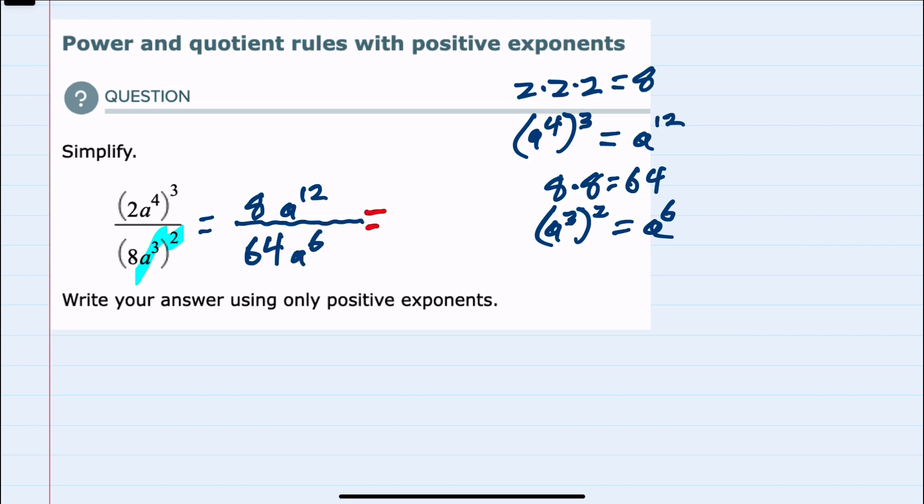As we continue to simplify here we notice that we have these number coefficients out in front, this 8 and 64. They can simplify just as we would simplify a fraction that was 8 over 64. We would look for the greatest common factor. 8 goes into 8 once, 8 goes into 64 eight times, so this simplifies to 1 over 8.